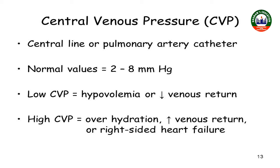When the CVP range is increased, there can be fluid overloading, congestive cardiac failure, pulmonary embolism, or pleural effusion. There can also be coughing and straining. In these conditions, the CVP range will be higher than the normal value.